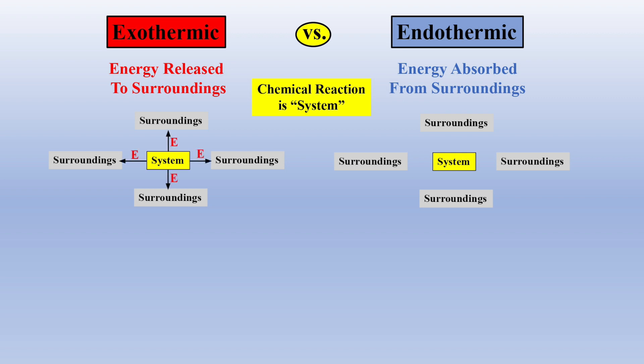For an exothermic reaction, energy is released from the system to the surroundings, and for an endothermic reaction, energy flows from the surroundings to the system.